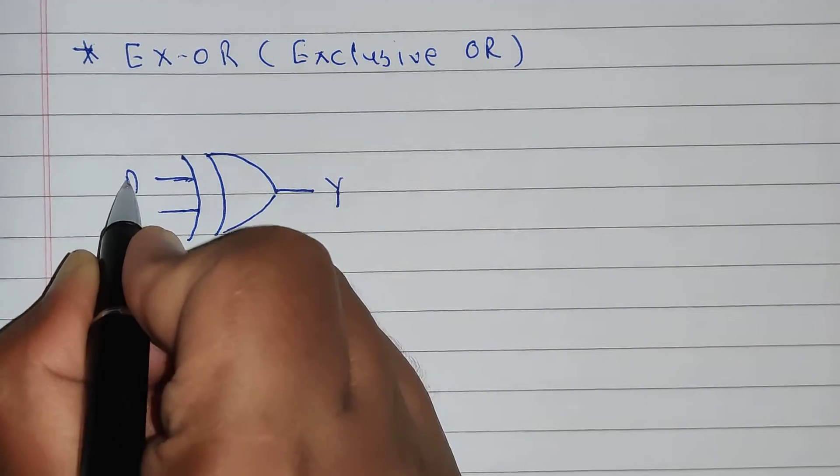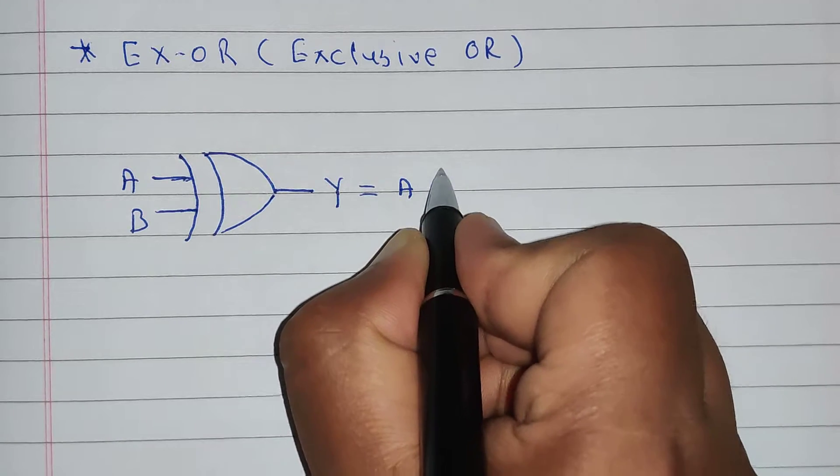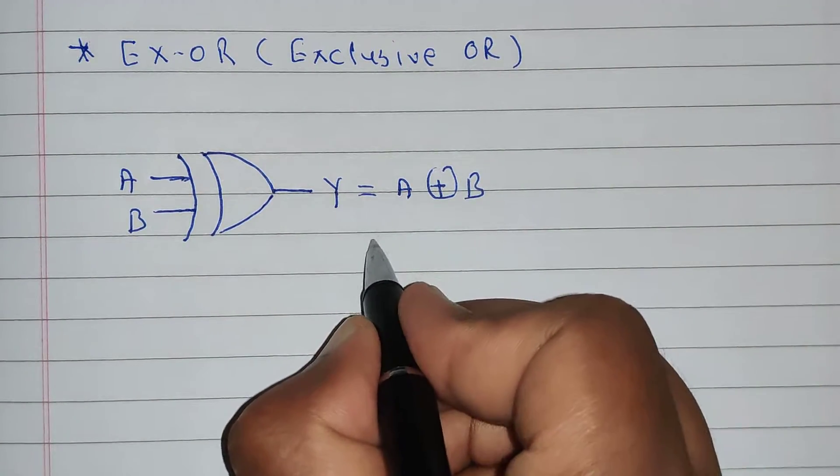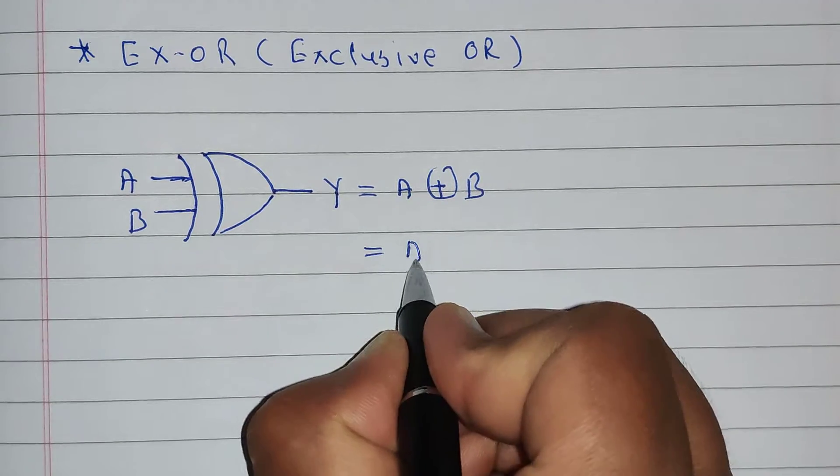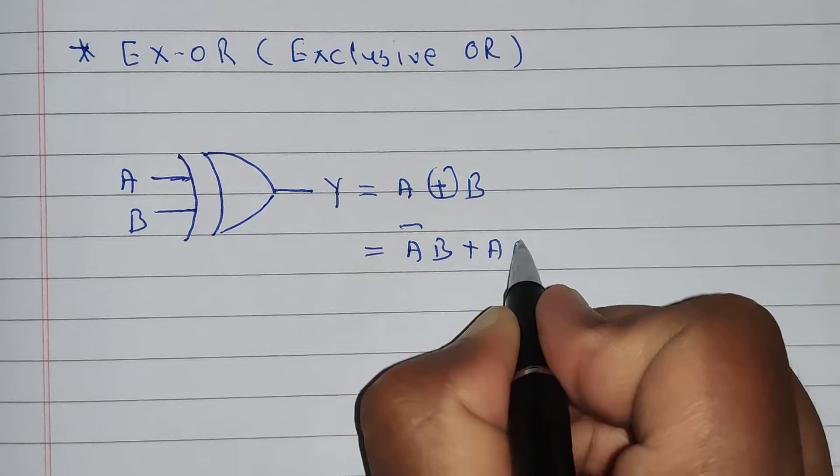Let's say inputs are A and B and output will be A plus circle B. Now, the simplified equation of it is A bar B plus A B bar.